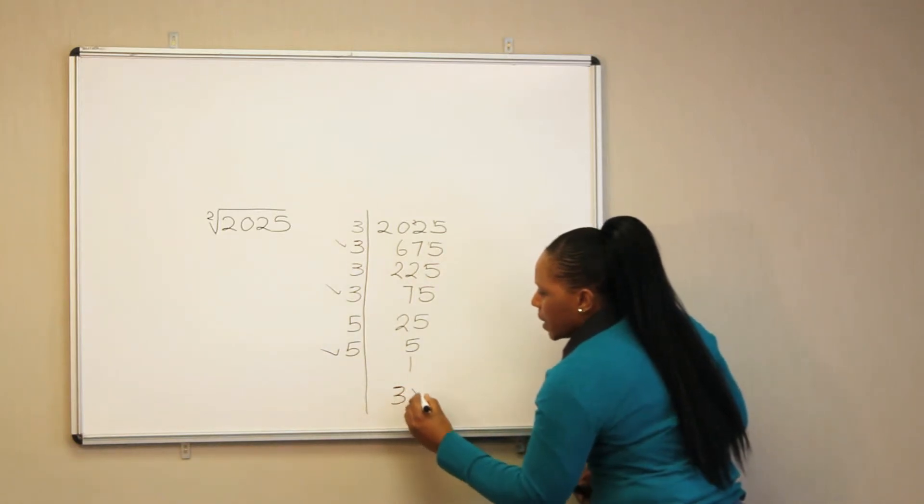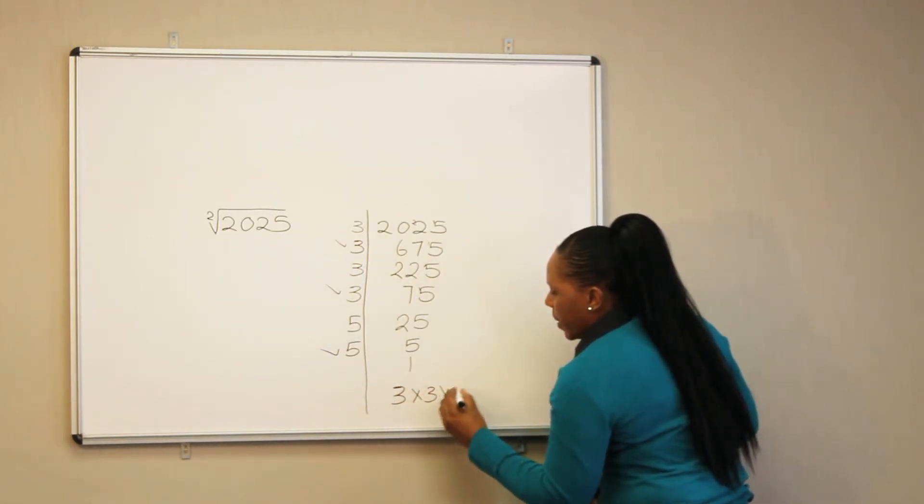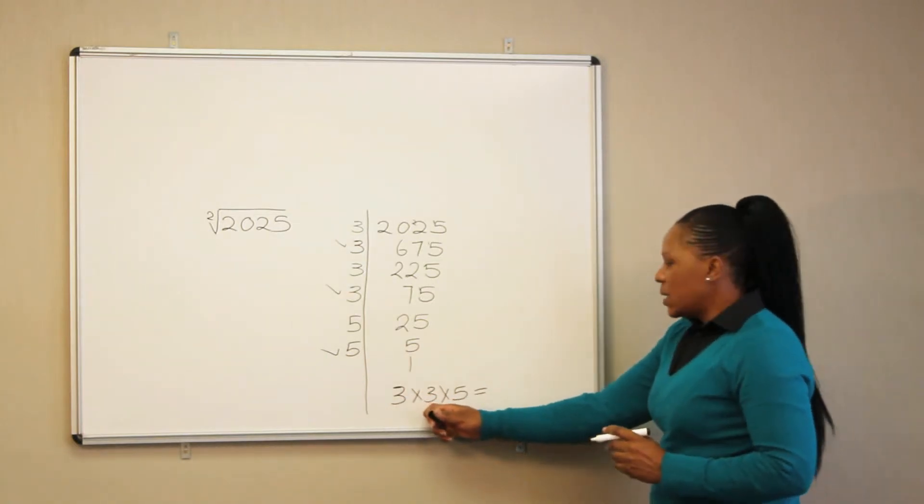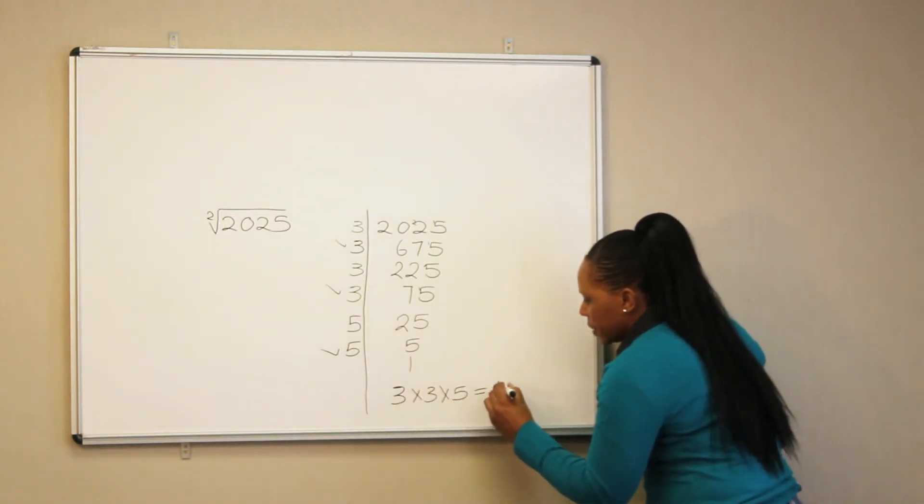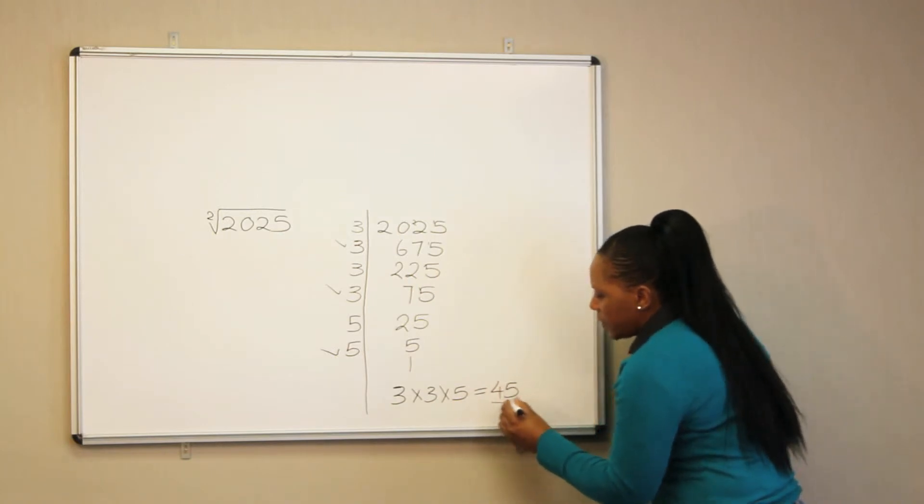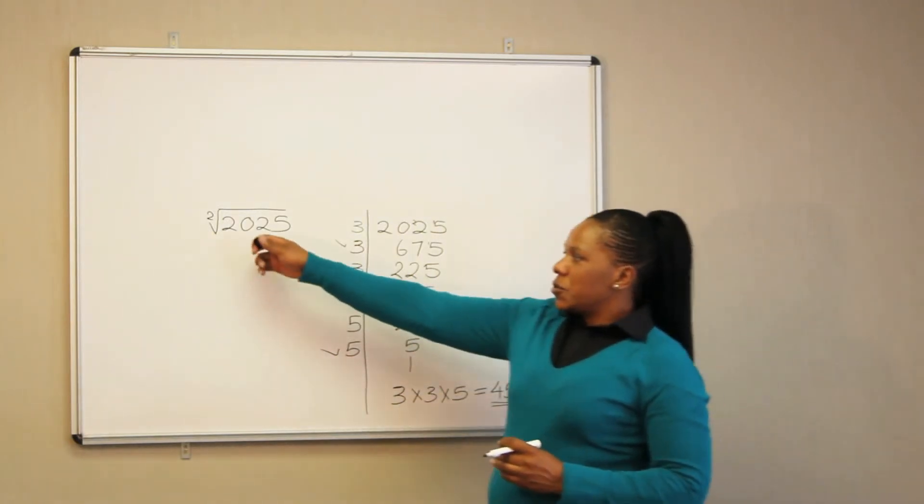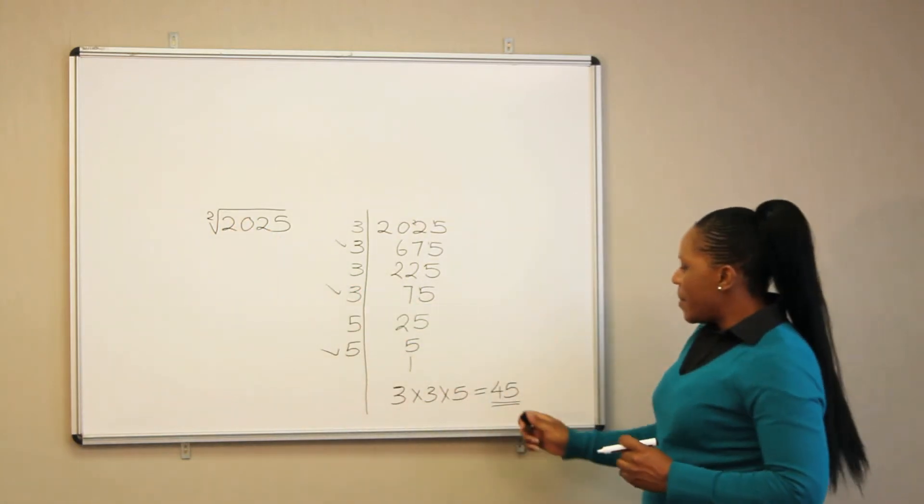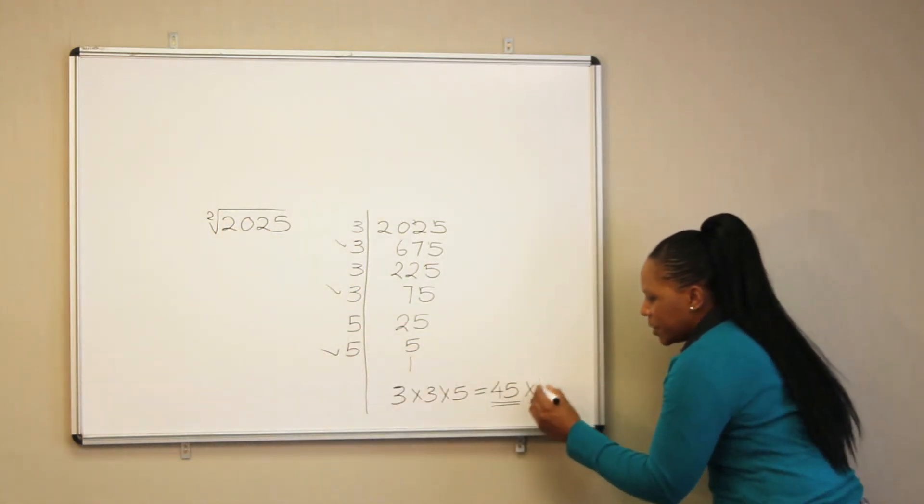So 3 multiplied by 3 multiplied by 5, 3 times 3 is 9 multiplied by 5 is 45. So 45 is the square root of 2025. This can be proved by multiplying 45 by 45.